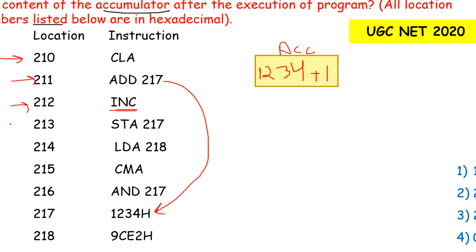Next instruction is STA 217. STA means store the content of accumulator at location 217. Whatever content is in accumulator, we need to store it at location 217. In accumulator we have 1235, so at 217, whatever content was there gets replaced by 1235.